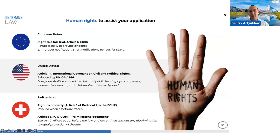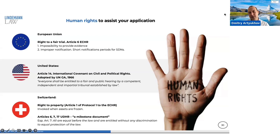There are other cases and other individuals who have invoked these rights in their claims before the Court of Justice of the European Union, and Alexander will talk more on these cases further. Basically, the tools that can be employed are: the right to a fair trial — Article 6 of the European Convention on Human Rights — which we have invoked and used in our practice to protect our mandates; and the right to property — Article 1 of Protocol 1 to the European Convention on Human Rights.